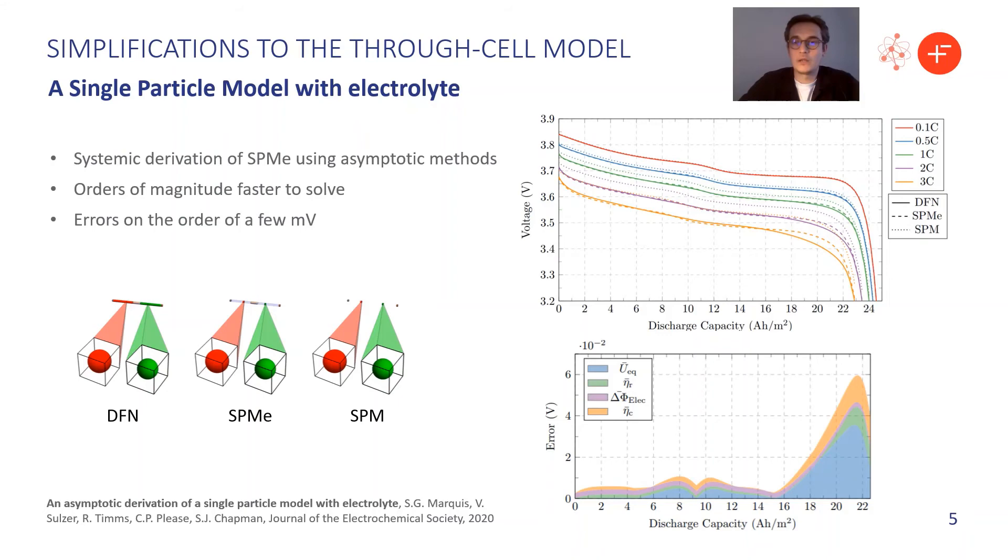You can take a look at the paper for the details here, but by doing this in a systematic way, we can ensure we've got the correct correction terms to the normal single particle model, and we can make good estimates on the error that we're going to be making whenever we use this model. This gives you this range of models we're talking about. You can choose DFN at one end of the spectrum, SPM at the other end, and you can get these correction terms in between. So here we're really getting a model that's approaching the fidelity of the DFN, with a computational cost similar to that of the SPM.